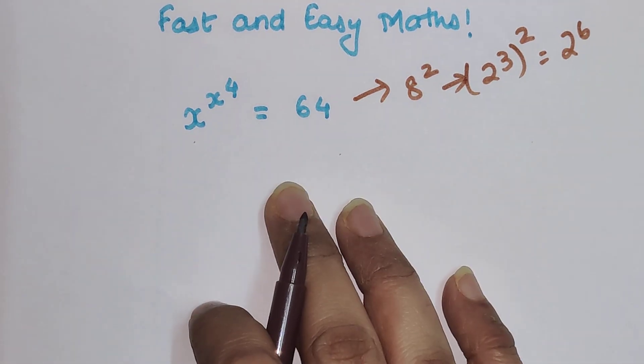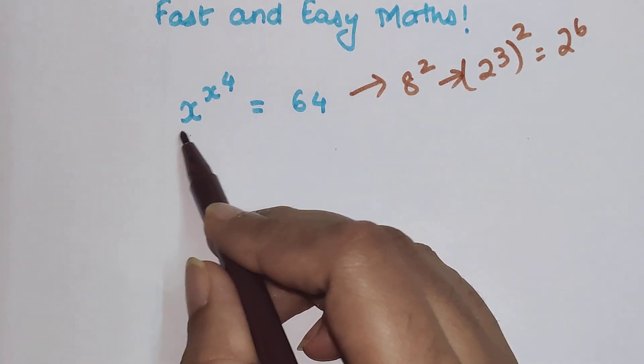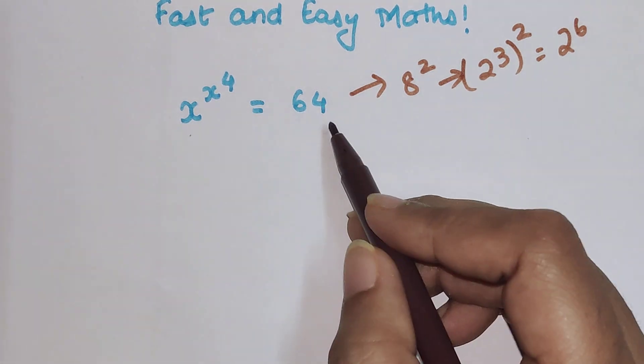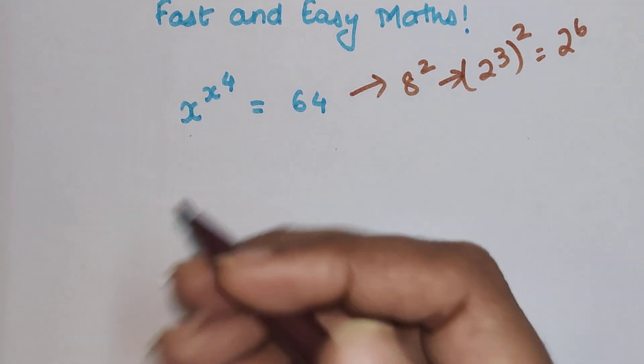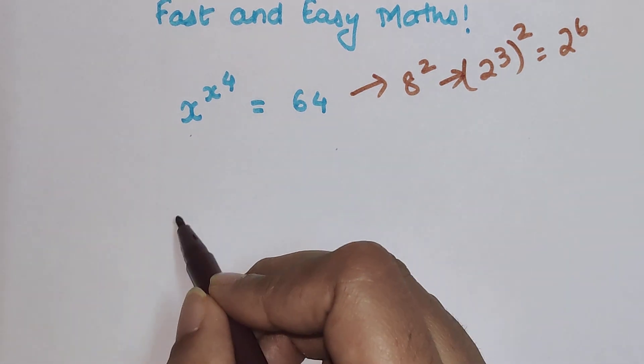So whenever you have something like this, you have to think about an alternative approach. The problem here is we already have x^(x^4). This is 64 which is raised to nothing. So in such a case, let's take the 4th power on both sides.